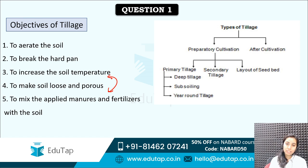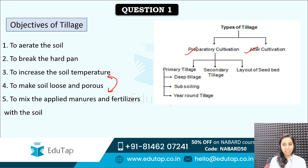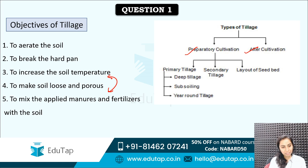Types of tillage are also given here: preparatory cultivation and after cultivation. These are the two types of tillage which are practiced. Preparatory cultivation includes three types of further tillage — primary tillage, secondary tillage and layout of seedbed. Apart from the objectives of tillage, you must know what are the different types of tillage performed.